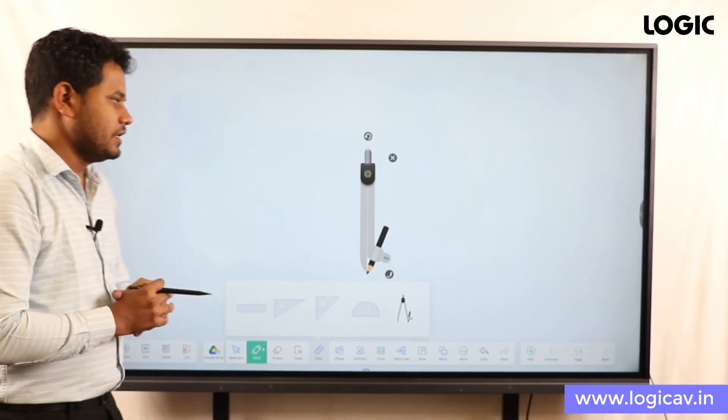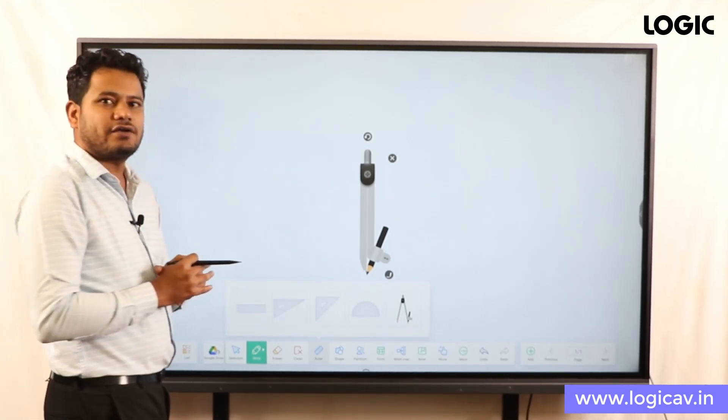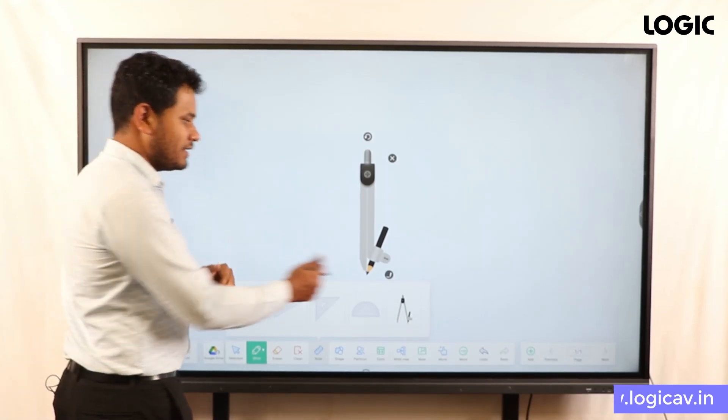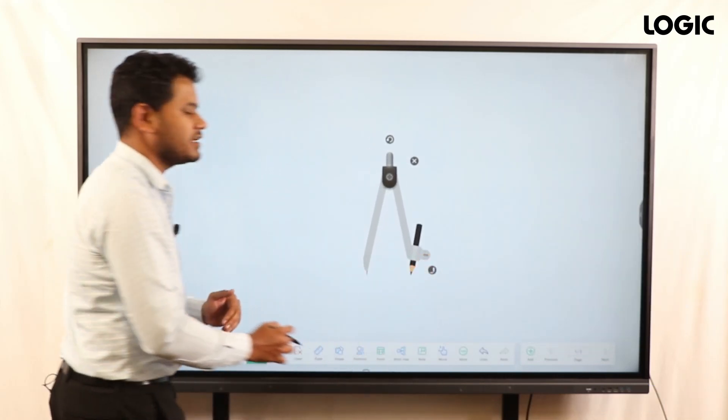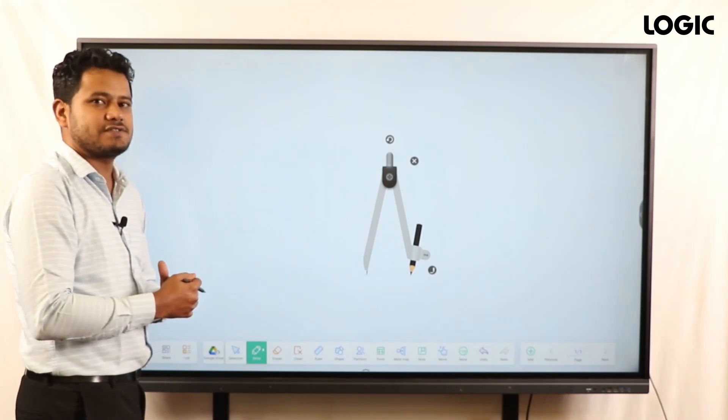Let me explain how the compass tool works here. Let me select a moderate radius, so to do that let me drag this compass a little bit. Currently I have used a 3.8 centimeter radius option which is selected to draw a circle.